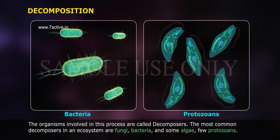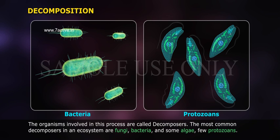The organisms involved in this process are called decomposers. The most common decomposers in an ecosystem are fungi, bacteria, some algae, and a few protozoans.